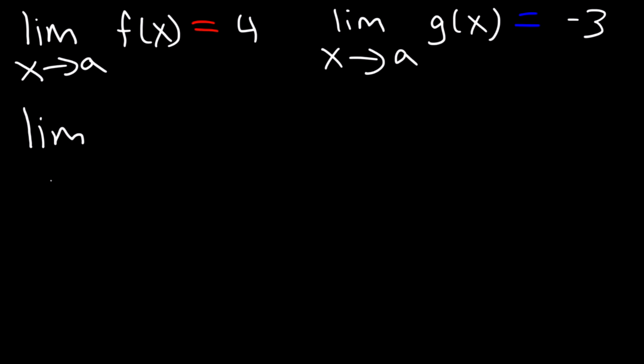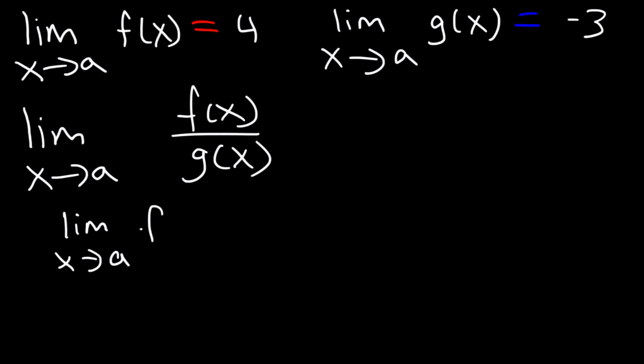Here's another example. What is the limit as x approaches a of f of x divided by g of x? How would you rewrite that expression to evaluate it? Here's what I would do. To separate f and g, I would write the limit as x approaches a for f of x, times the limit as x approaches a of 1 over g of x.